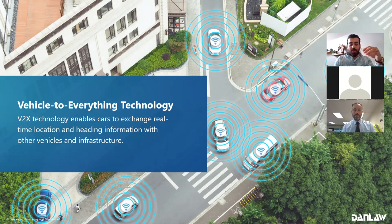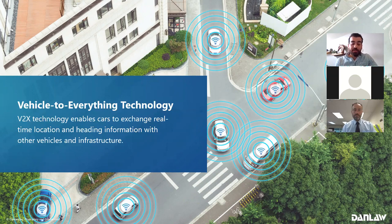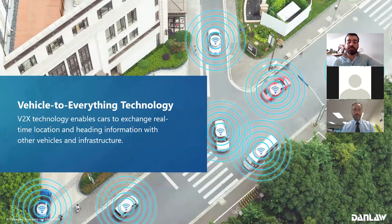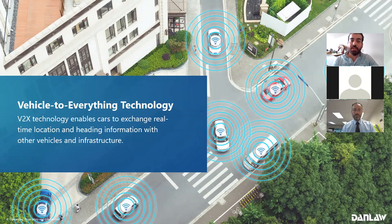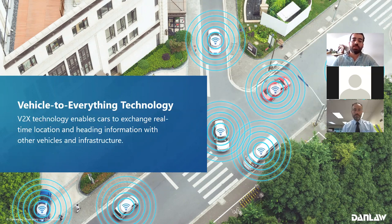The preemption application is a vehicle-to-infrastructure V2X technology, which is a subnet of vehicle-to-everything or V2X technology. V2X enables vehicles to exchange real-time location and heading information with other vehicles and infrastructure. Other subnets of V2X technology include V2V (vehicle-to-vehicle communications), V2P (vehicle-to-pedestrian), V2D (vehicle-to-device), and V2G (vehicle-to-grid).